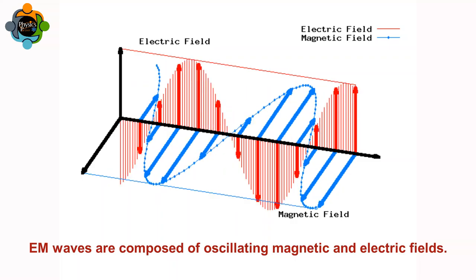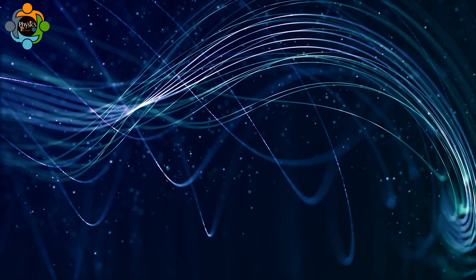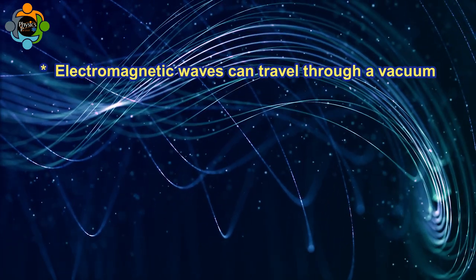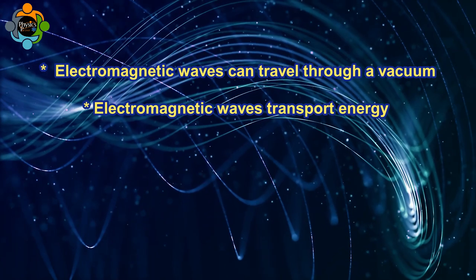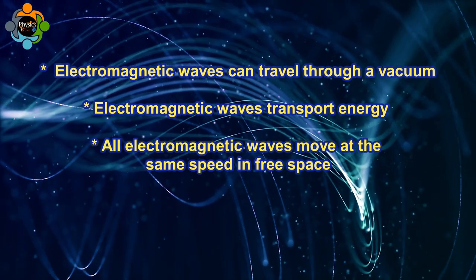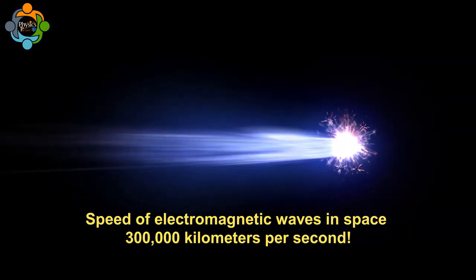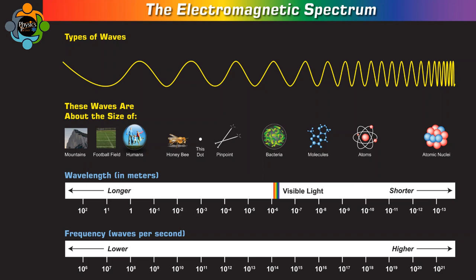All electromagnetic waves share some common properties: they can travel through a vacuum, they transport energy, and they all move at the same speed in free space — a mind-boggling 300,000 kilometers per second. The electromagnetic spectrum refers to the entire range of electromagnetic radiation.